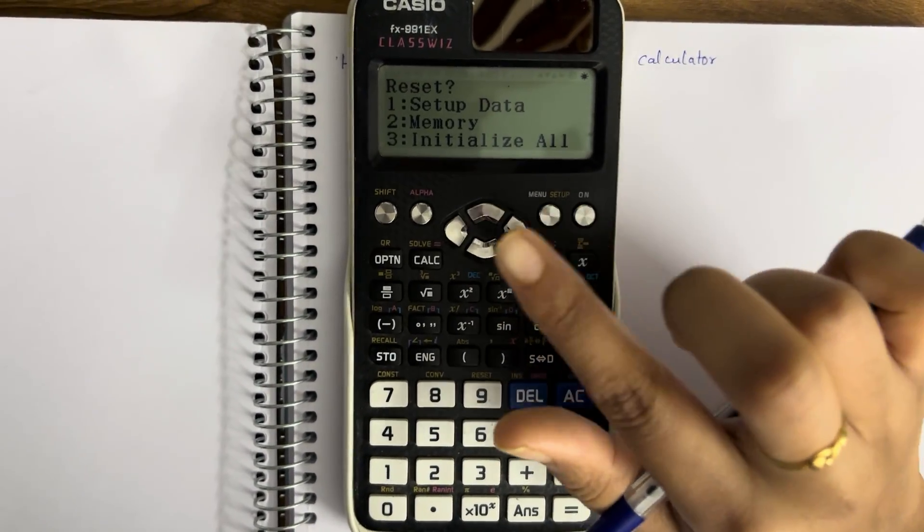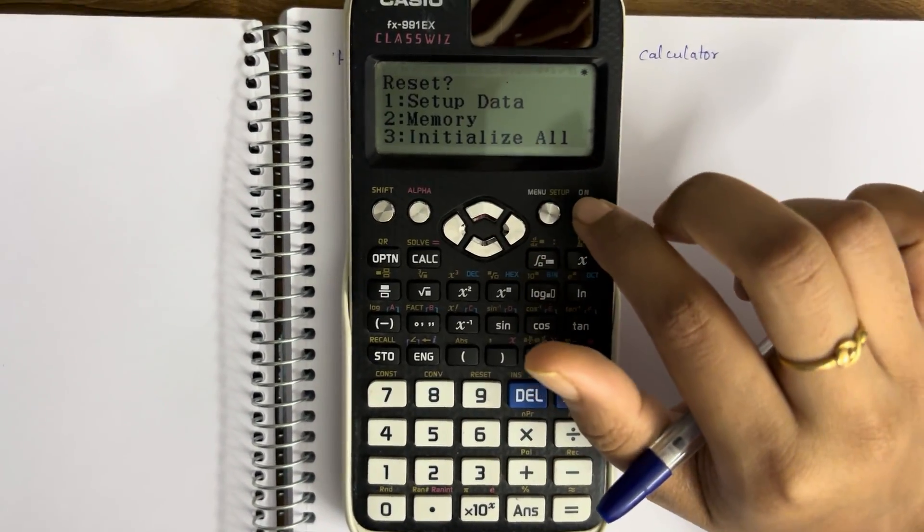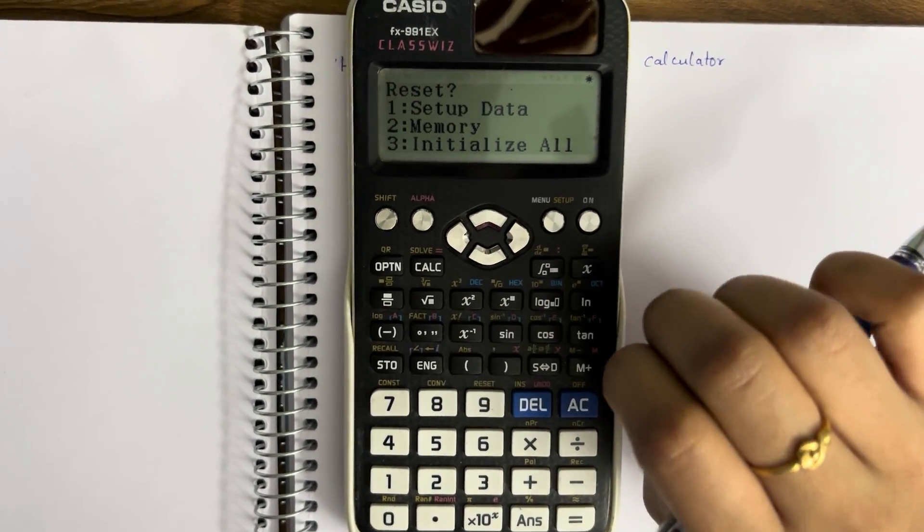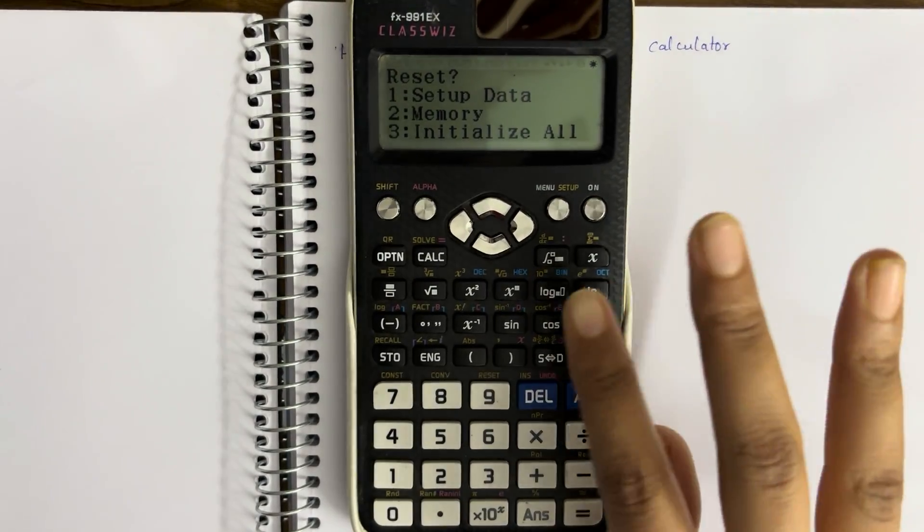We have three options as you can see: setup data, memory, and initialize all. Setup data will reset all of your settings but does not clear any of the memory. If you want that, you can go ahead and click it.